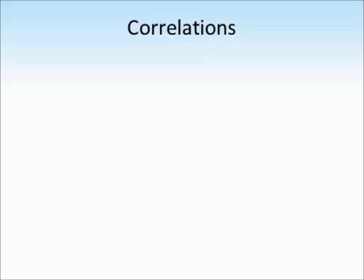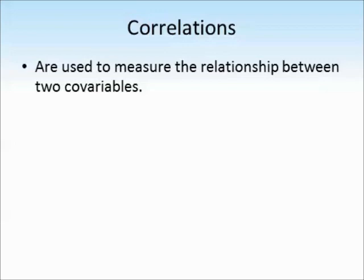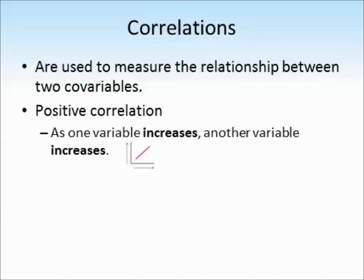So let's talk about correlations. They're used to measure the relationship between two co-variables, so we're looking at two things that might vary or change together. Remember, correlations do not have independent and dependent variables because we're not deliberately manipulating one thing and measuring another. It's just two measurements that may or may not change with each other.